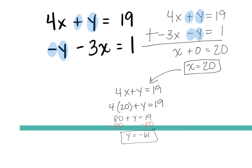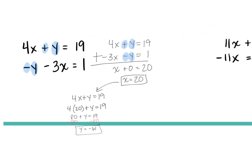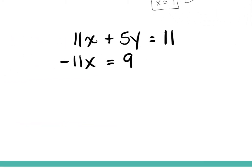On your quiz it's going to say to solve using a particular method — graphing, substitution, or elimination — and you have to know how to do all three. You can use one method to check your work, but I need to see the required method in your solution. Last one on this slide: 11x + 5y = 11 — what's in common between the two equations?